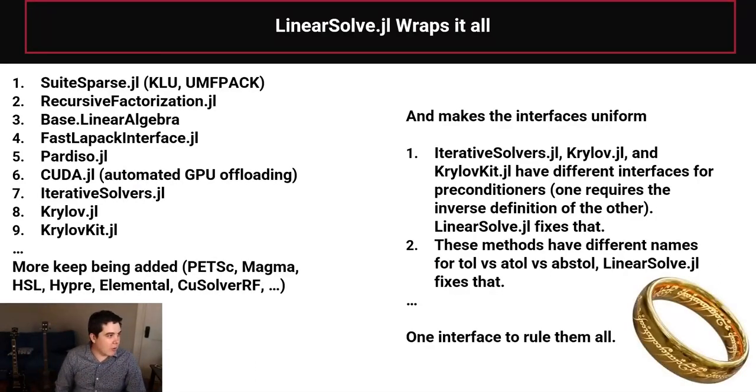It tries to wrap it all. We have about 10 packages in there now, and we're adding more like PETSC, MAGMA, Elemental, cuSOLVER, RF, all these things that you've probably never heard of, but it will be very good to just be able to change five characters and try this in a package. And one of the key details here is that we made the interfaces uniform. So one detail that you might not have known about is that the three different iterative solver packages in Julia,